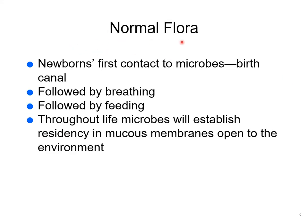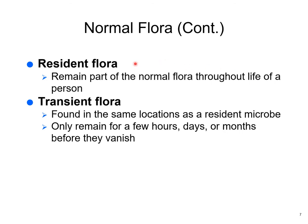Normal flora: a newborn's first contact with microbes is in the birth canal, then by breathing, then by feeding. They develop a residency in mucous membranes open to the environment, then finally populate the gut and entire intestinal tract. Resident flora remain part of normal flora throughout the life of that person. Transient flora come and go — they may be in the same locations as resident flora but just hang out for a while and leave.